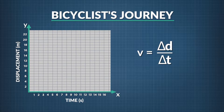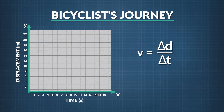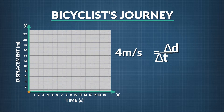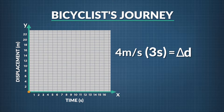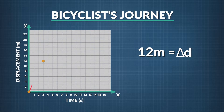Remember that velocity is defined as the change in displacement divided by the change in time. For the interval from 0 to 3 seconds, our velocity is positive 4 meters per second. If we begin at the origin, then after 3 seconds we have moved 3 seconds times 4 meters per second, or 12 meters. So let's draw a line connecting those points.